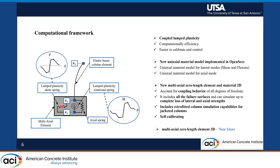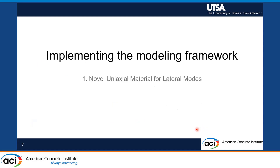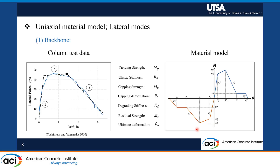So far, the framework has been developed in two dimensions, and in the near future we would also like to expand the model to 3D. In the next couple of slides, I'm going to talk about how we define the behavior of the rotational spring and shear spring — the lateral modes — based on our observations from column tests. For the backbone, nothing too fancy: we just took the idealized shape of what we see in the column test — elastic branch, hardening branch, and at the end of this branch the capping deformation, the point where the failure starts and the element enters the degrading branch. The backbone can be asymmetric, and the same things are applicable for the shear spring as well.